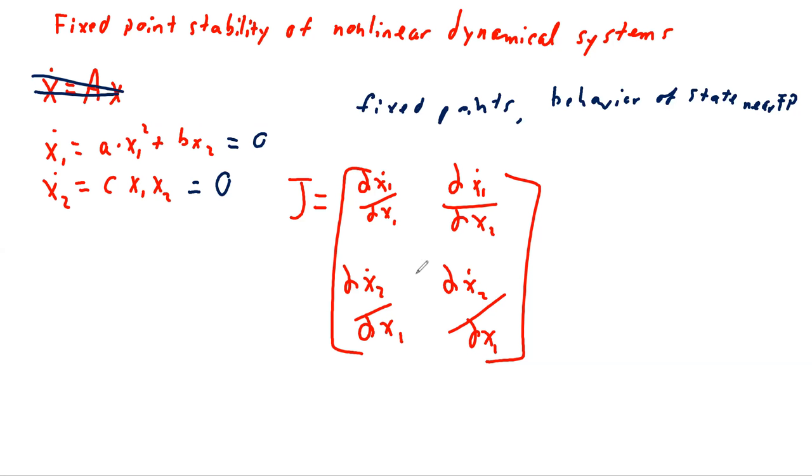And just to fully walk through it, right, if we were to solve this Jacobian for this system of equations, for this differential system that we have here, dynamical system, then we would say, okay, what's the partial of x one with respect to x one? Well, that is just two a x one. And if we look at it with respect to x two over here for the second term, that's just b. And then over here, we're going to look at this and we've got c x two, and here we have c x one. And so this is our Jacobian.